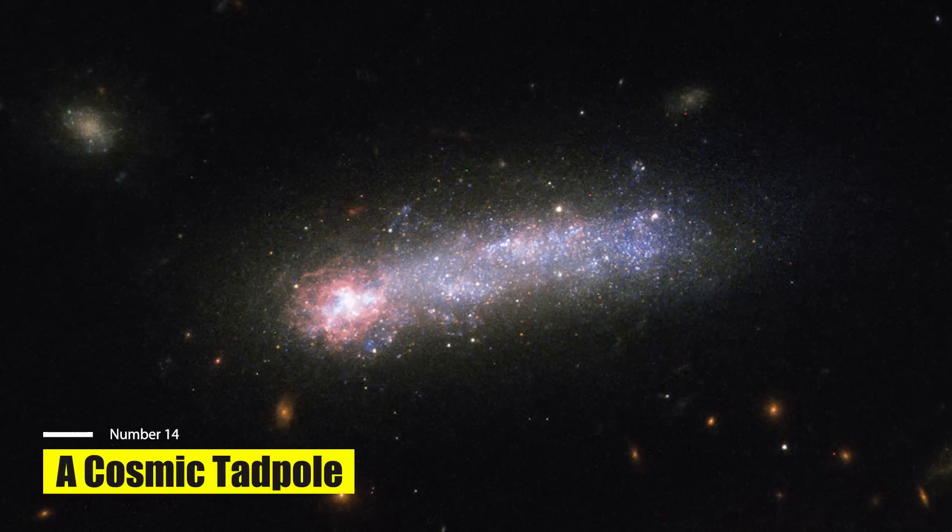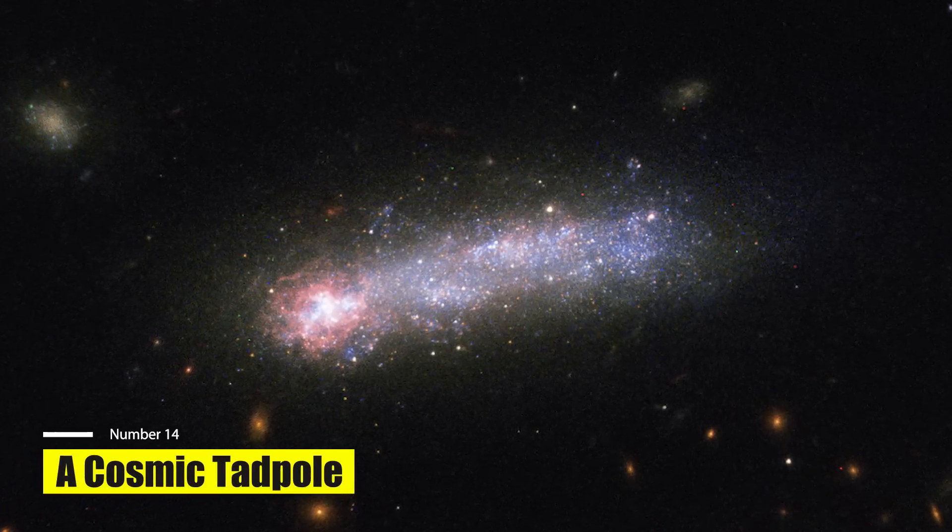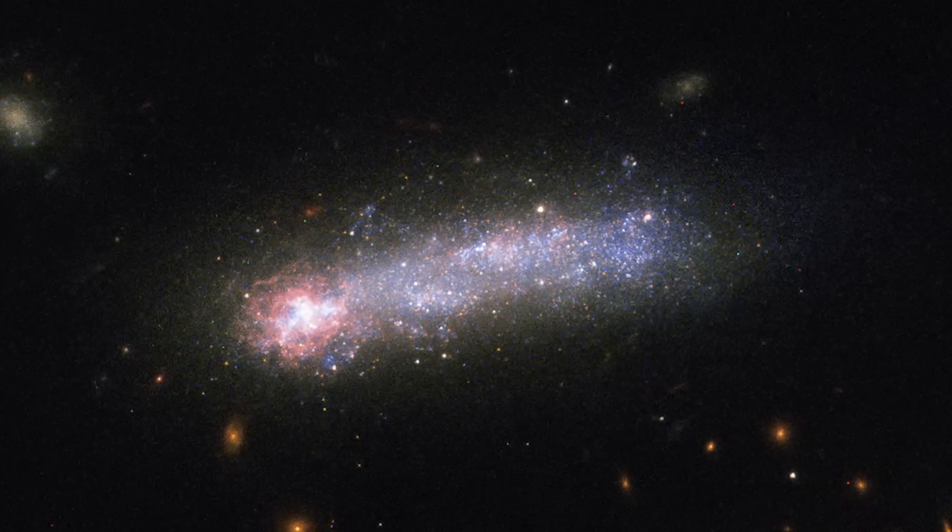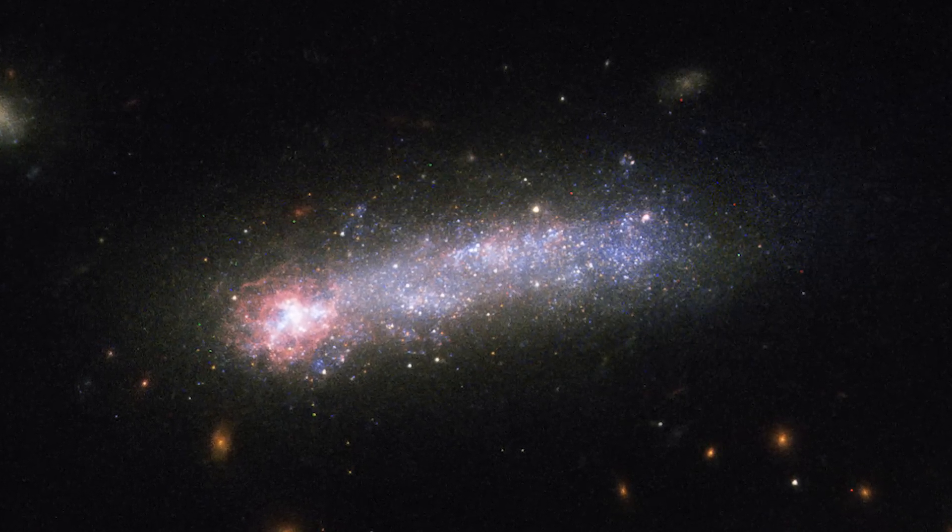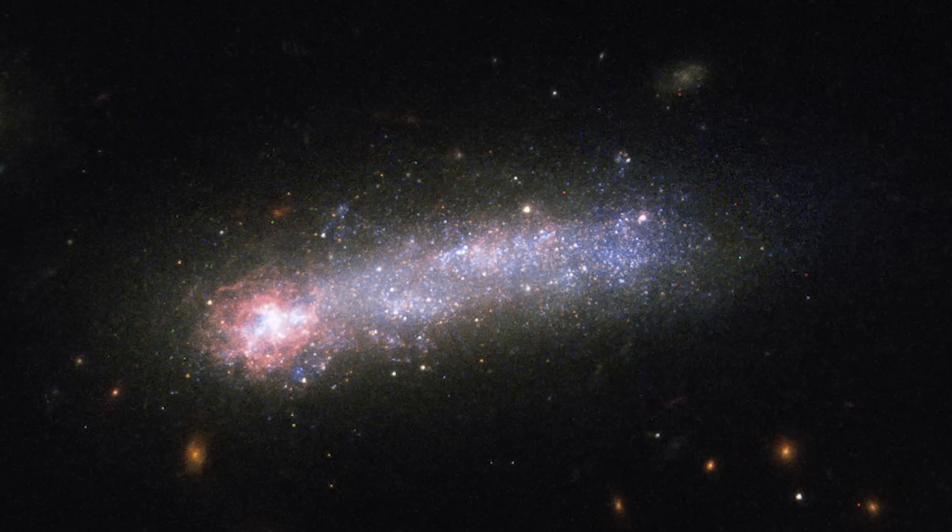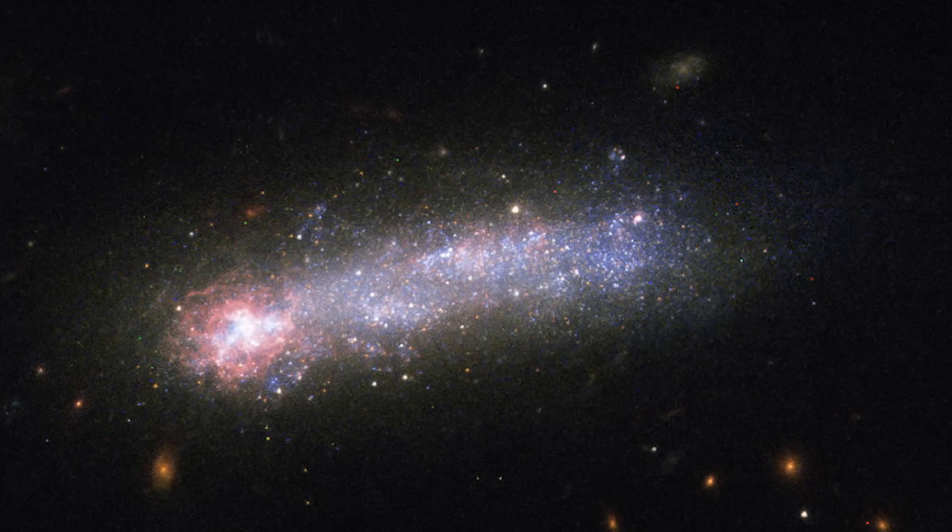A cosmic tadpole, Lita 36252, also called Kiso 5649, is a small galaxy captured in this new image from the NASA ESA James Webb Space Telescope. Owing to its luminous head and elongated tail, this galaxy is classified as part of a group of objects known as tadpoles.